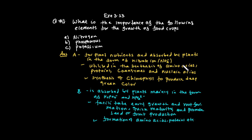Exercise 3.13: Nitrogen is essential for the formation of amino acids, proteins, co-enzymes, and nucleic acids, and for the synthesis of chlorophyll which produces the deep green color in plants. Phosphorus facilitates early growth and root formation. It promotes quick maturity and promotes seed and fruit production.